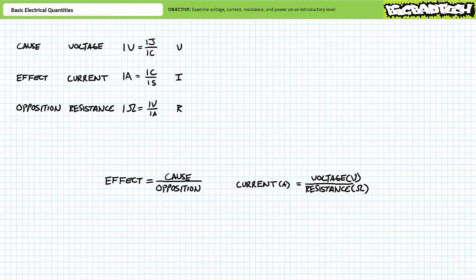Conversely, if cause was held constant and opposition decreased, effects should increase. Stated another way, same voltage, less resistance yields more current.